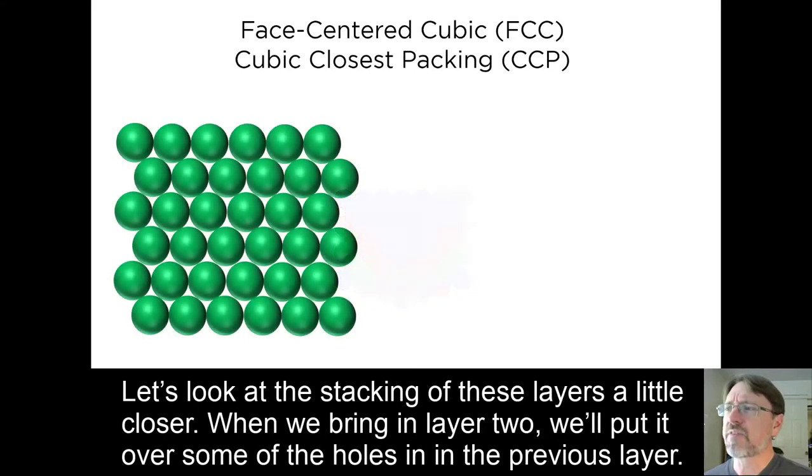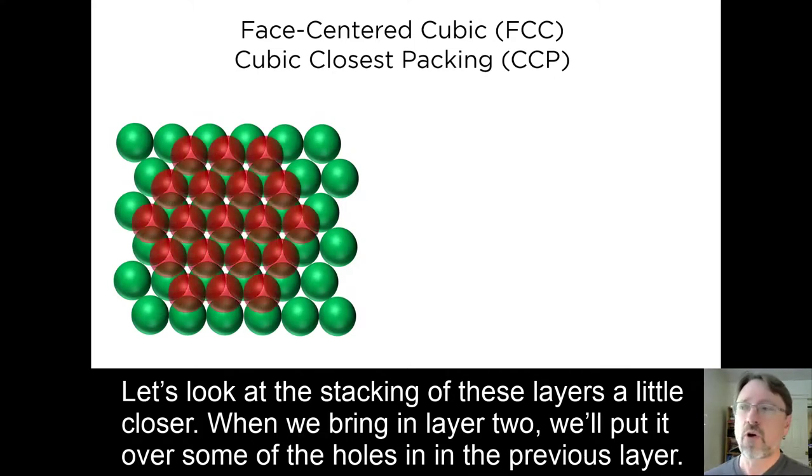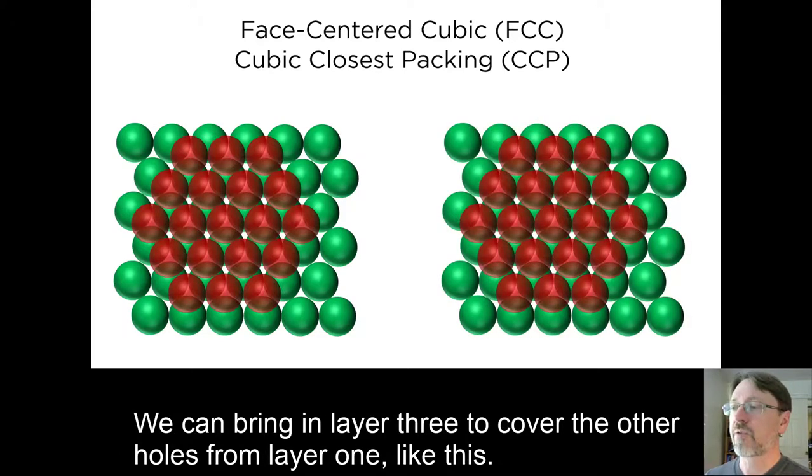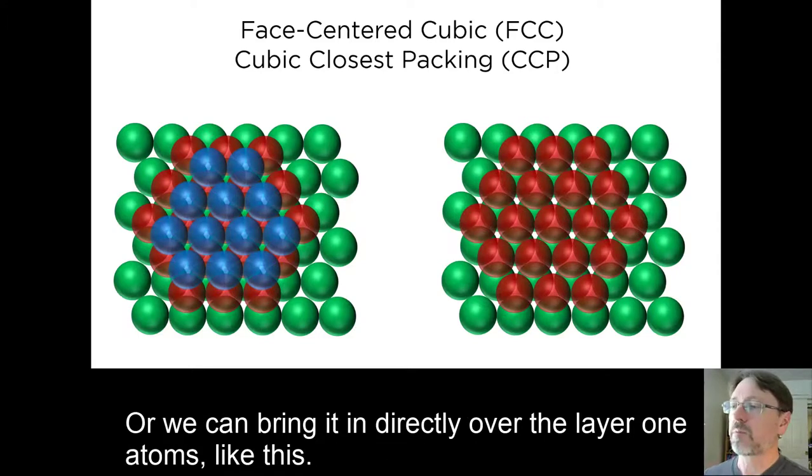Let's look at the stacking of these layers a little closer. When we bring in layer 2, we'll put it over some of the holes in the previous layer. But notice that layer 2 only covers half of the holes. That means that for layer 3, we have a choice. We can bring in layer 3 to cover the other holes from layer 1, like this, or we can bring it in directly over the layer 1 atoms, like this.